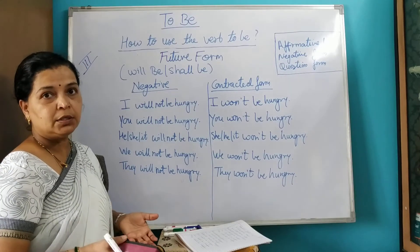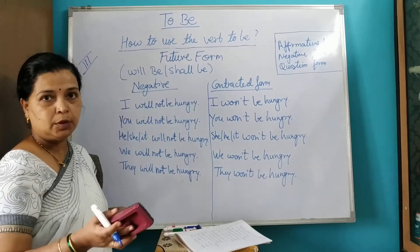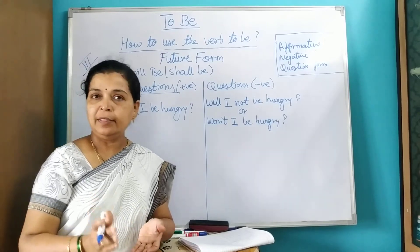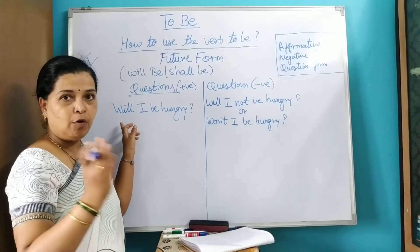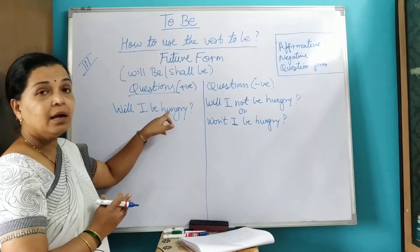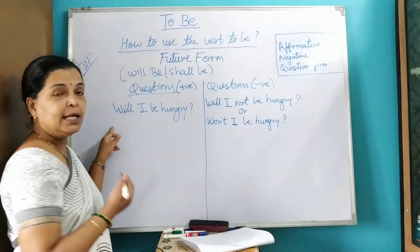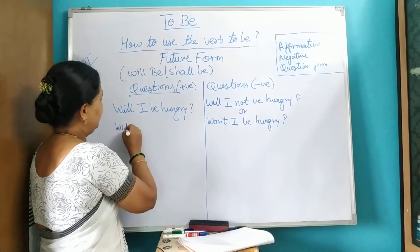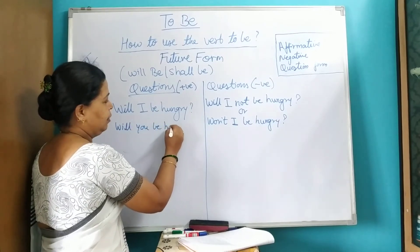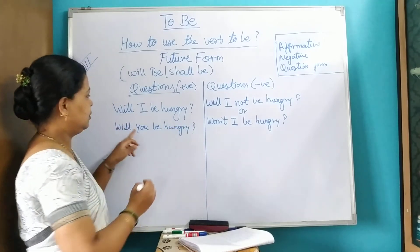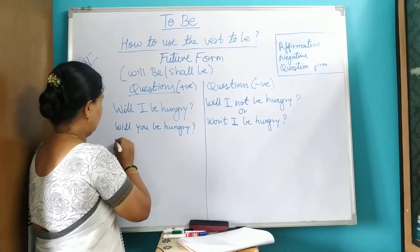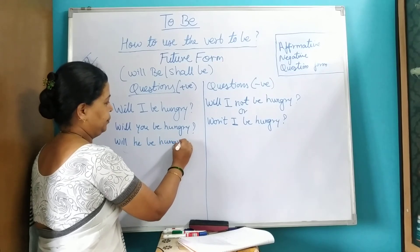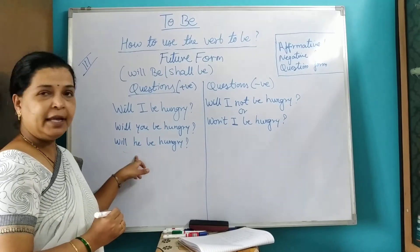Now let's form questions using the future form of 'to be.' To make a question, 'will' moves to the front. First person: 'Will I be hungry?' Second person: 'Will you be hungry?' Third person: 'Will he be hungry?' 'Will she be hungry?' 'Will it be hungry?'